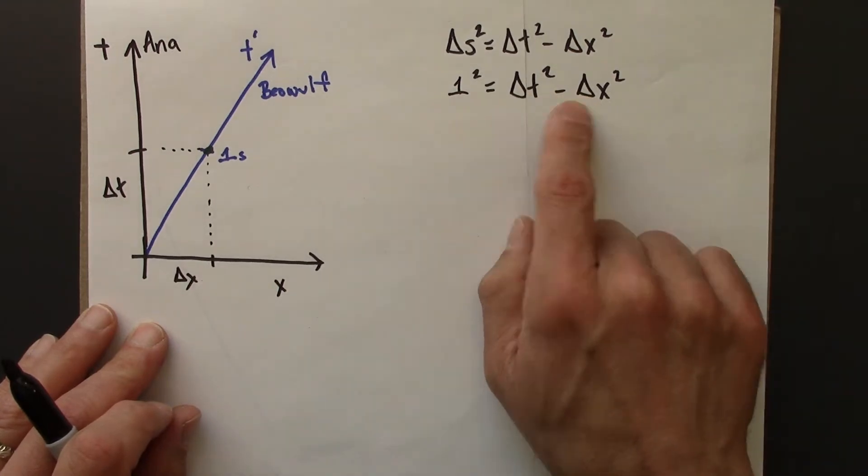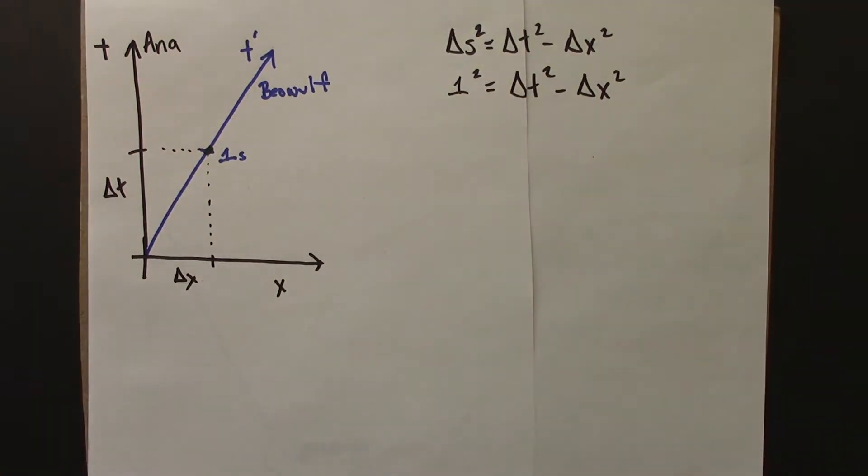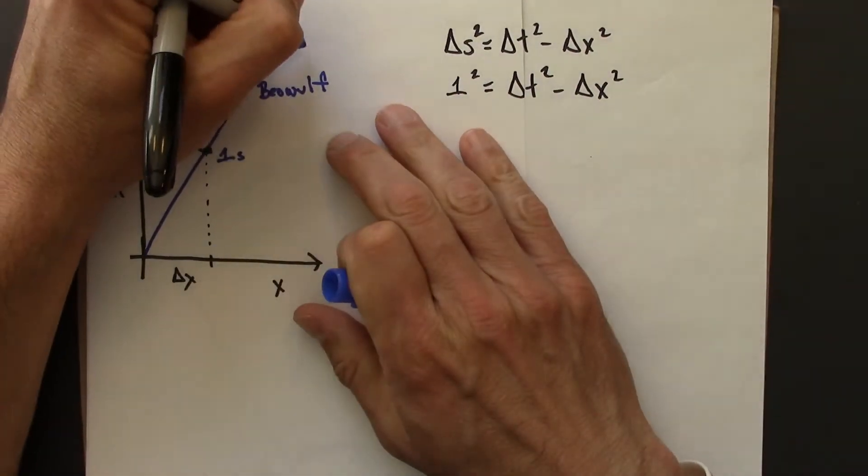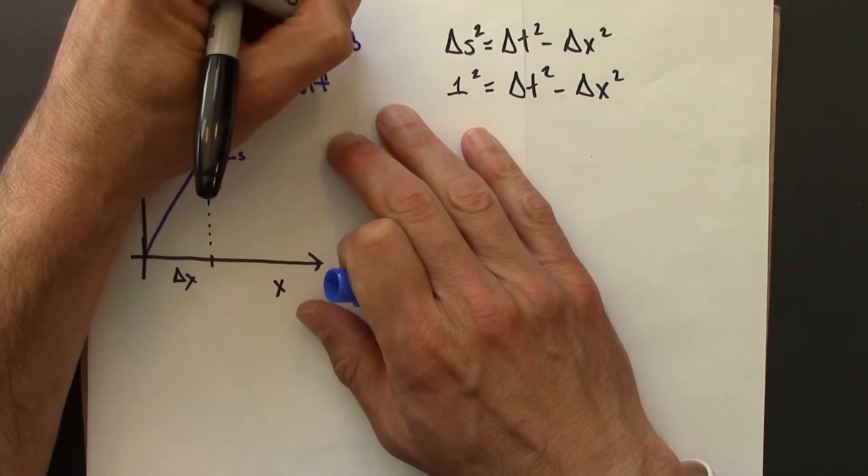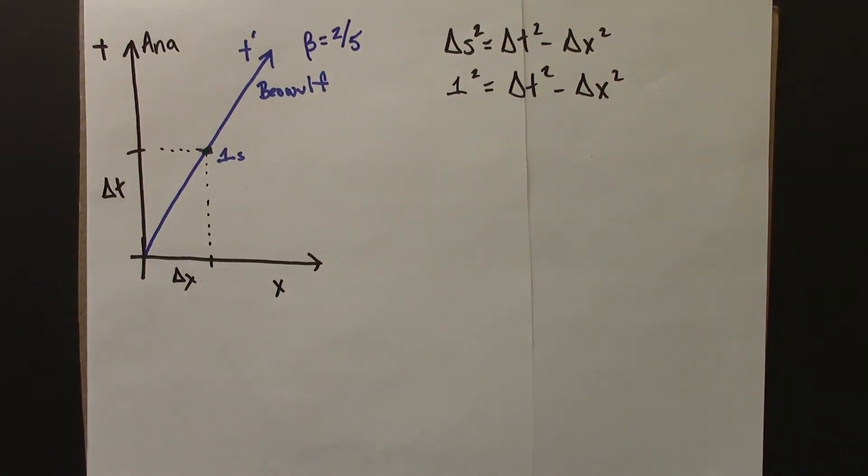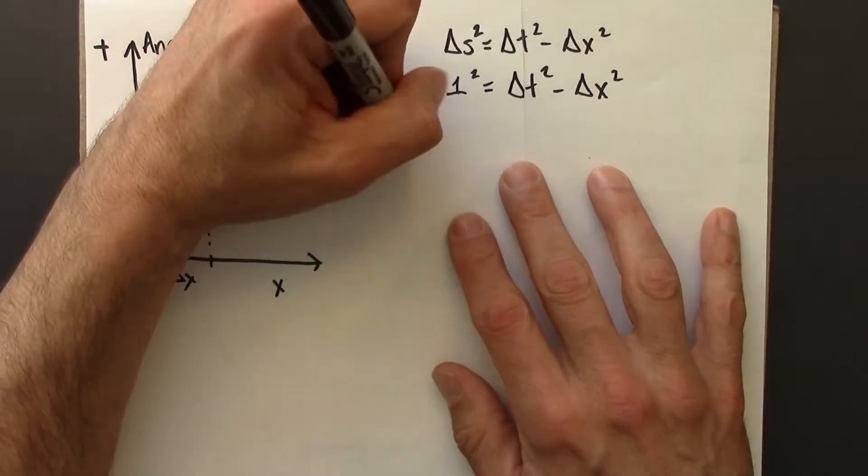Aha. However, delta x and delta t are related, because I know how fast Beowulf is going. Just as in the previous example, he's going at beta. And when it comes time to put a number in, I'll say beta is 2 fifths. So, let's see.